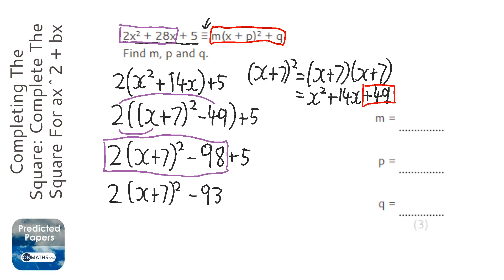And I think that gets us in the form that the question asked us for. The m is the number outside the bracket, which is 2. The p is the 7 inside the bracket. And the q is minus 93 on the outside of the bracket.